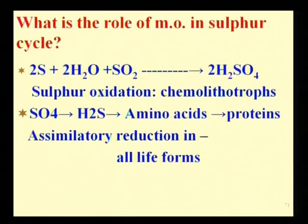Sulfur oxidation: in the first reaction, sulfur is oxidized by chemolithotrophs — applying the same principle as discussed earlier for chemolithotrophic energy generation.